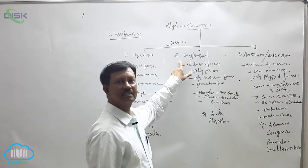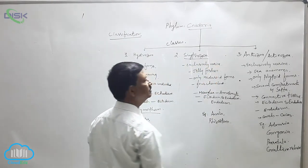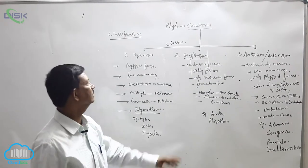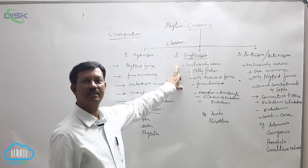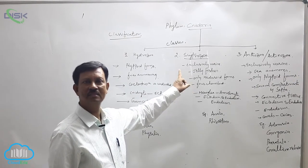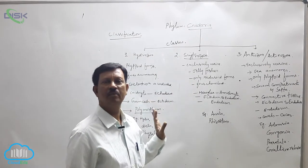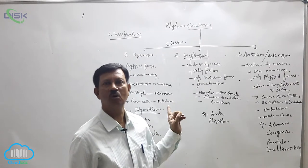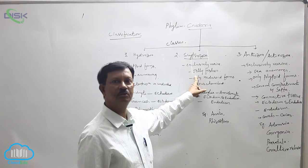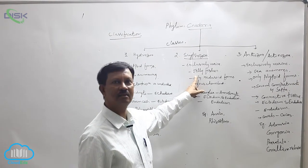The second class is Scyphozoa. Scyphozoans are commonly known as jellyfishes — they are not fish, and they are found in marine water. Mesoglia is well developed here, which is why they are commonly known as jellyfishes. They are exclusively marine animals, not found in freshwater. Only medusoid forms are present and no polymorphism is present. The medusa is umbrella or saucer shaped. They produce male gametes as well as female gametes because the sexes are separate.